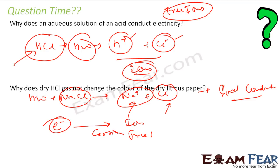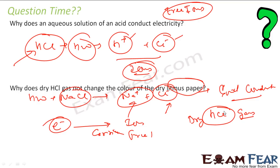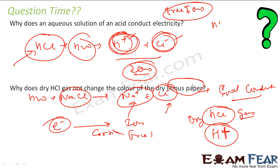Now the next question: why does dry HCl not change the color of litmus paper? We have this dry HCl — HCl is an acid, but this is dry HCl in gas form. As I said, for anything to change the litmus color it has to be acidic, meaning it should have H⁺ ions. Dry HCl does not have H⁺ ions. Since it does not have H⁺ ions, it is not acidic, it does not have the acidic property, and so it will not change the color of litmus paper.